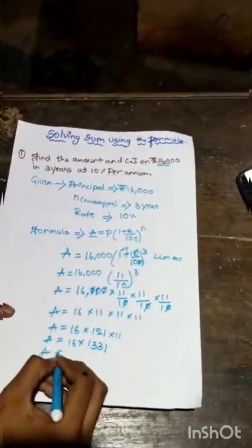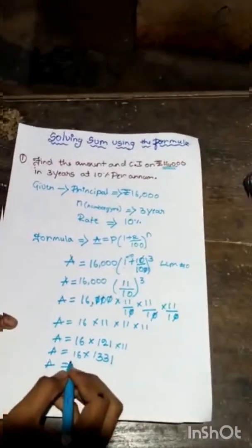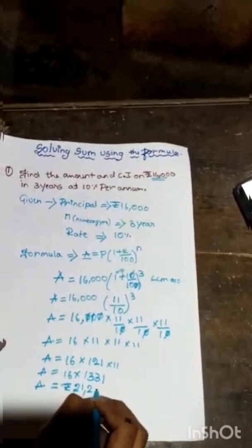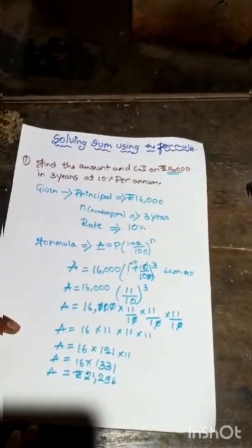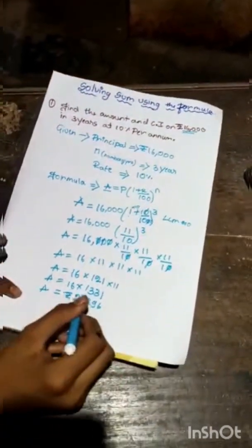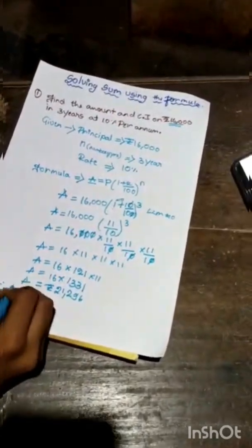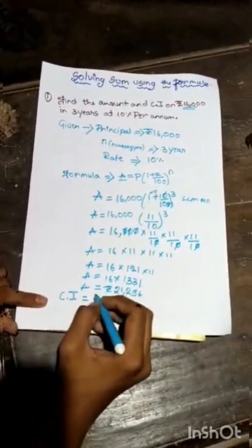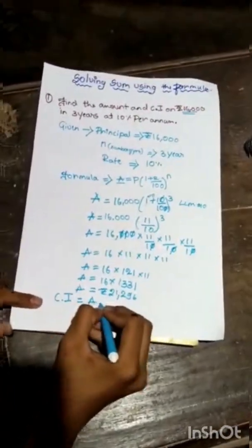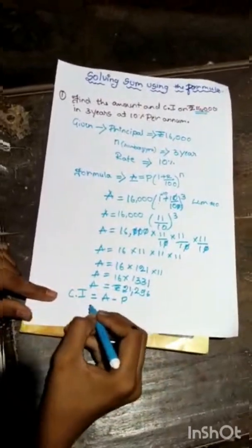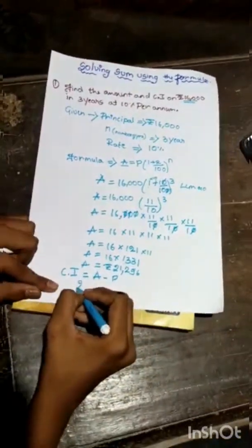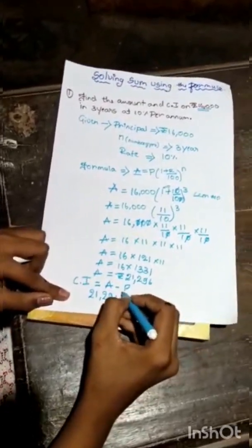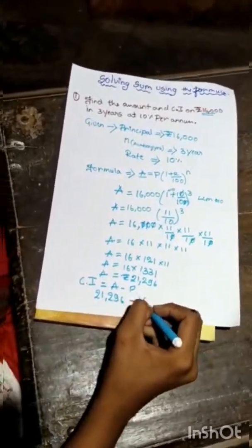Then A equals, we'll multiply this and we will get the answer as rupees 21,296. Then we'll get this answer. We'll find CI. CI is A minus P. So here, amount is 21,296, then minus the principal is 16,000.